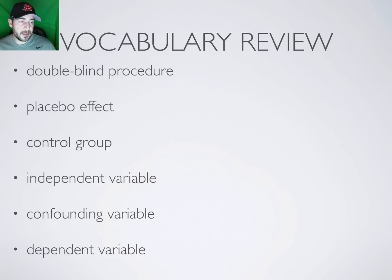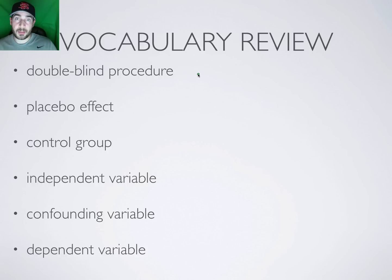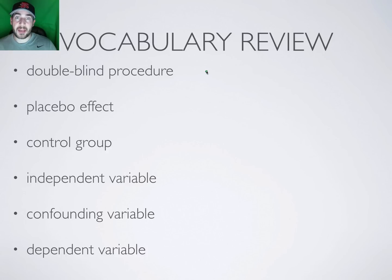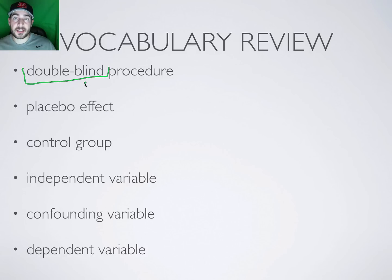Double-blind procedure is used in experiments — usually drug trials — where neither the researcher conducting the experiment nor the participant knows who is receiving the actual drug. We don't want participants anticipating improvement, and we don't want an overzealous researcher to influence results. Only a separate researcher tracking the data knows what each person received, keeping it as legitimate as possible.